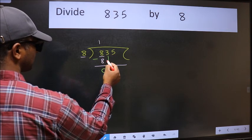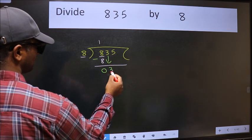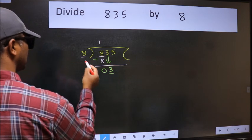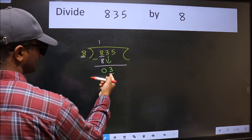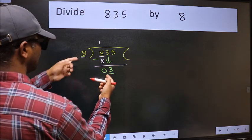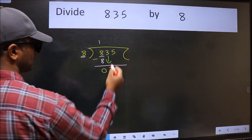After this, bring down the next number, 3. Now here we have 3 and here 8. 3 is smaller than 8, so we should bring down the second number.